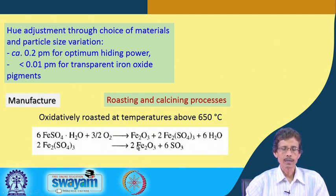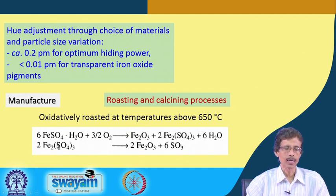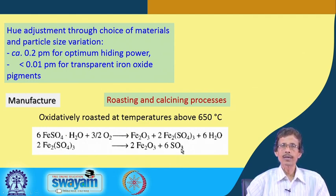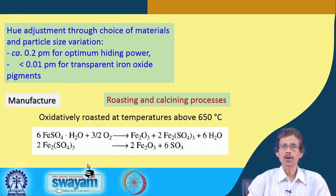During the calcination step, both the residual ferrous sulfate and the initially formed Fe2O3 are burned completely to give the full Fe2O3 product. A useful byproduct is sulfur trioxide, obtained from the sulfate anion, which can be used industrially for producing sulfuric acid.